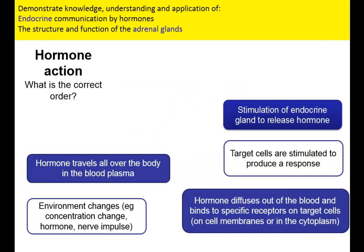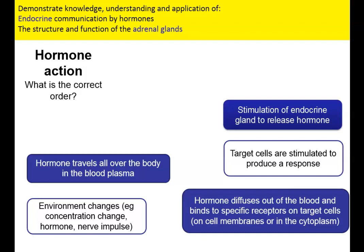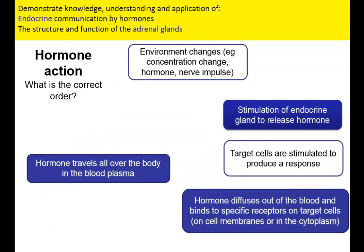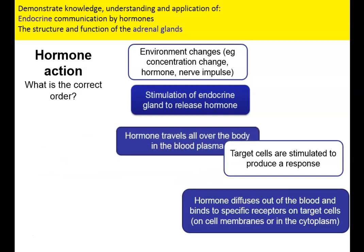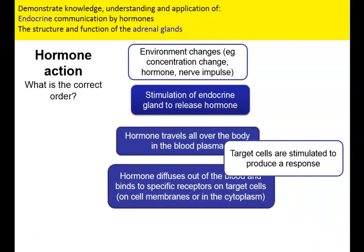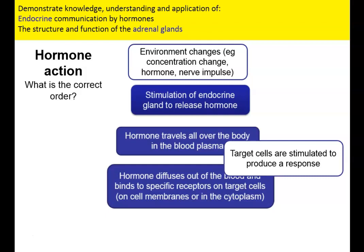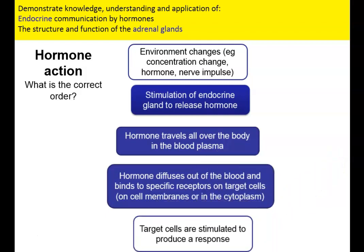Before we look at how hormones interact with their target cells, let's remind ourselves of the correct order of hormone action. First, the environment changes — either internally or externally. That triggers the release of a hormone from a particular endocrine gland. That hormone then travels all over the body in the blood plasma. Once it reaches the target cells, the hormone diffuses out of the blood and binds to specific receptors within that target cell — either on the cell membrane or in the cytoplasm. Those target cells are then stimulated to produce a response.